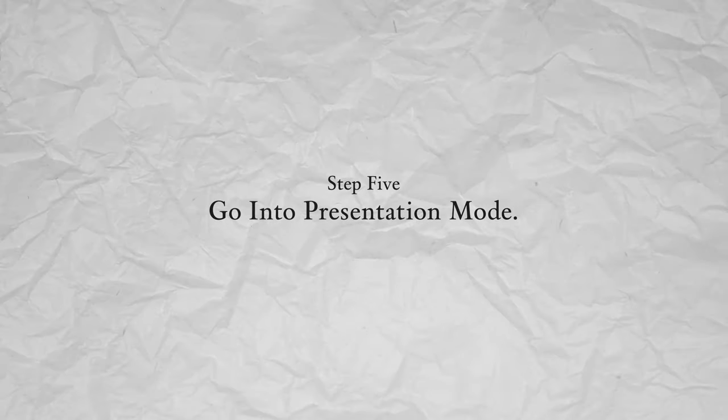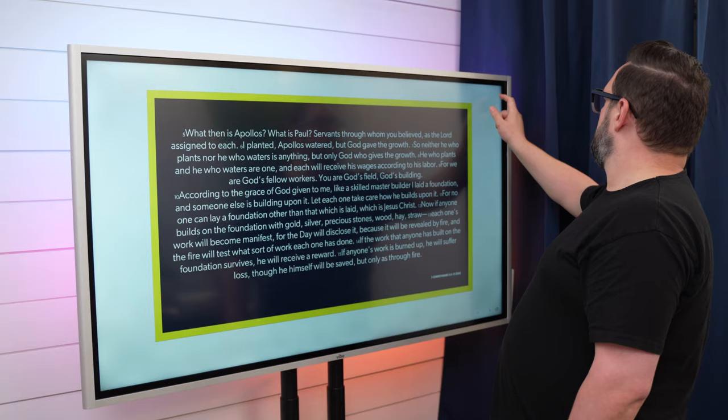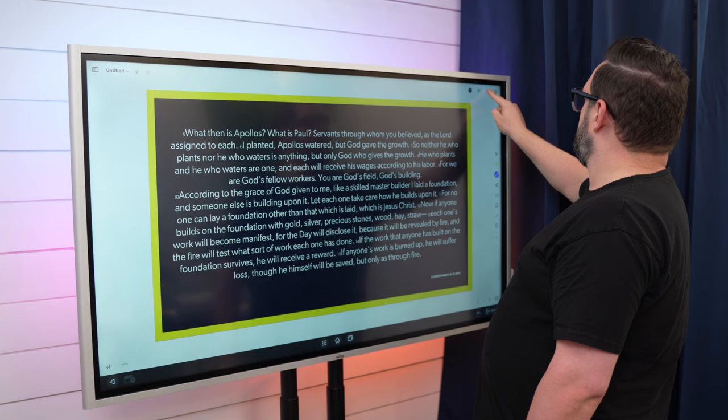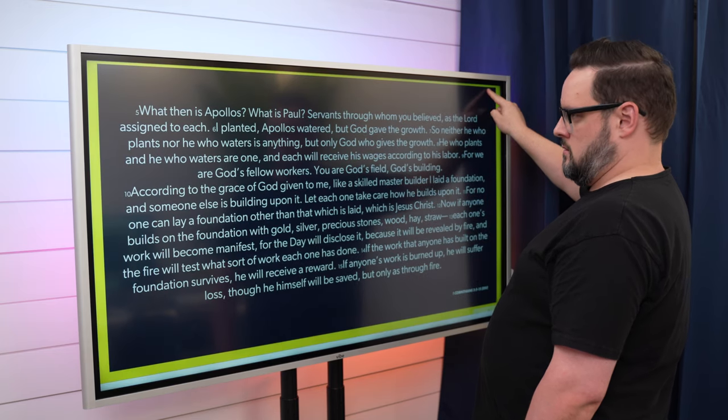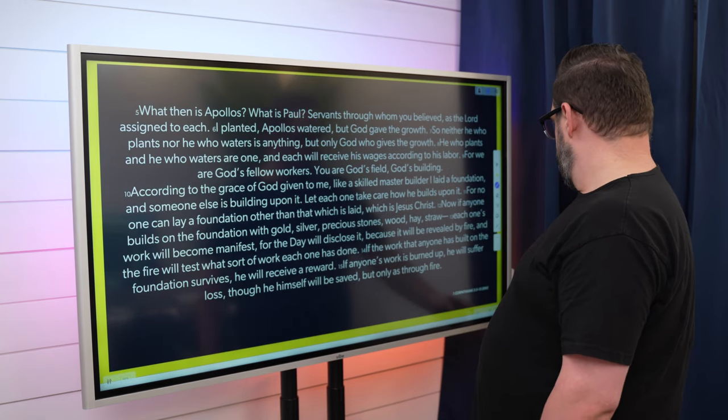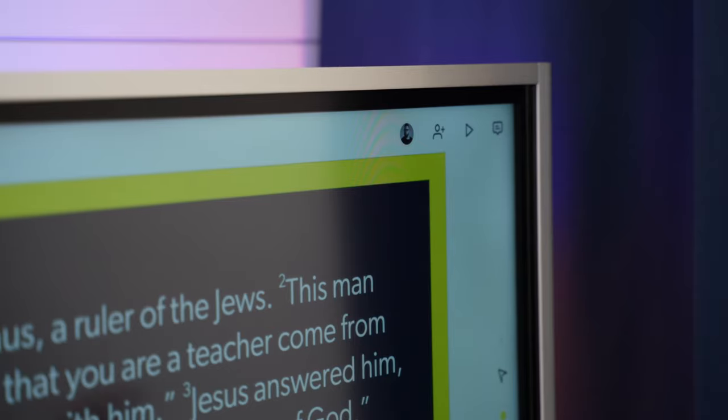Step 5: Go into Presentation Mode. In the top right corner of your Smart Board you'll see a play button. This activates Presentation Mode. Press and hold the play button until your slides zoom to full screen.